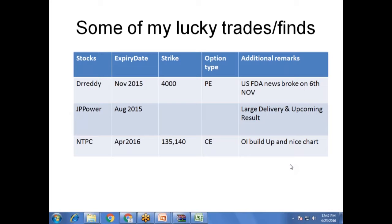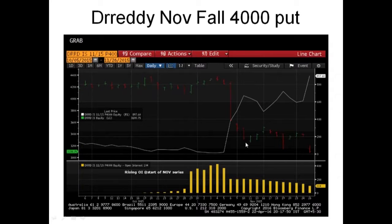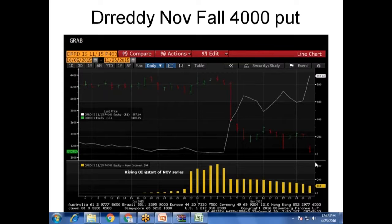Now look at the OI at the start of the November series. In the November contract — this is 29th, 30th, 2nd, 3rd, 4th and 5th, the October contract had just expired — Dr. Reddy's 4,000 put had almost 400 contracts. Dr. Reddy was trading at 4,250 and it was a very illiquid contract. 4,100, 4,200, 4,150, 4,250 — none of them had more than 20 to 25 open interest. But there was open interest in the 4,000 put of almost 400 contracts, almost 50,000 to 60,000 open interest.